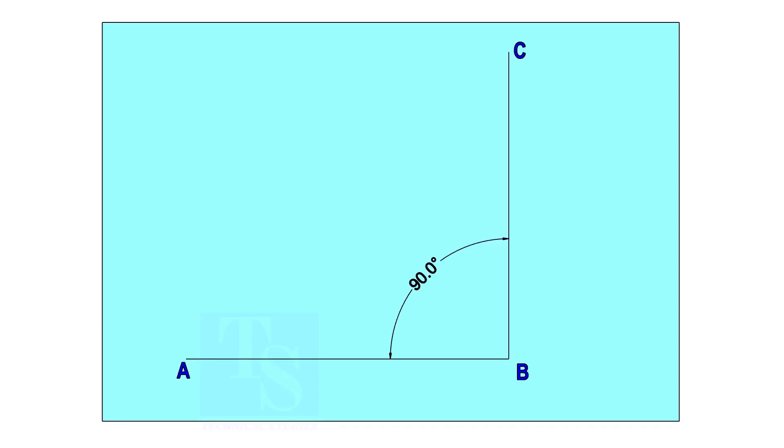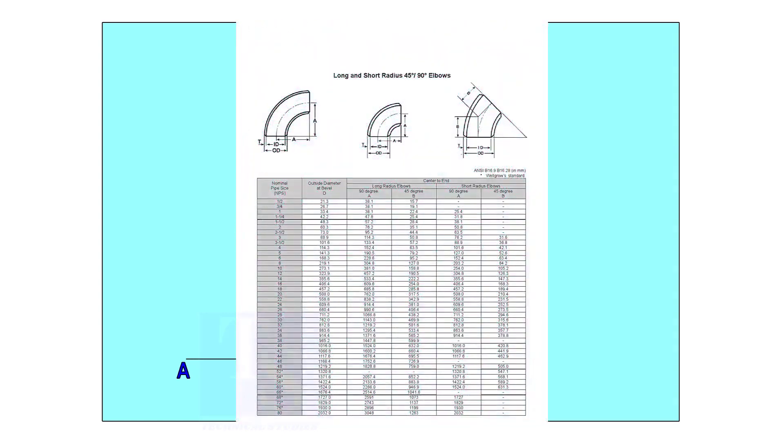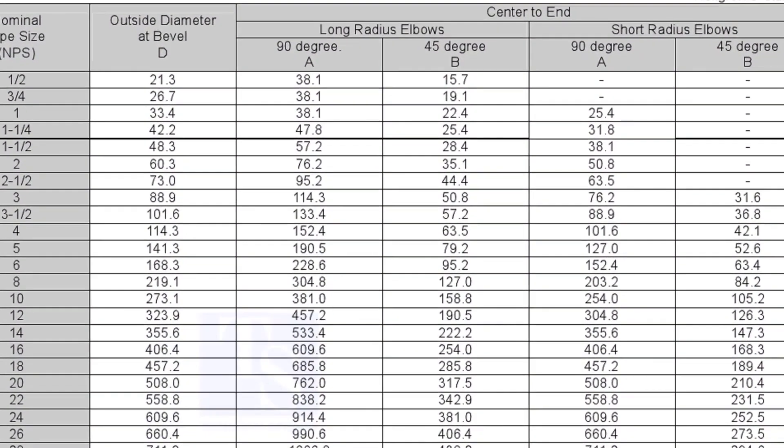Mark line AB and a perpendicular line BC. Let us check the center radius of the 16-inch long radius elbow.